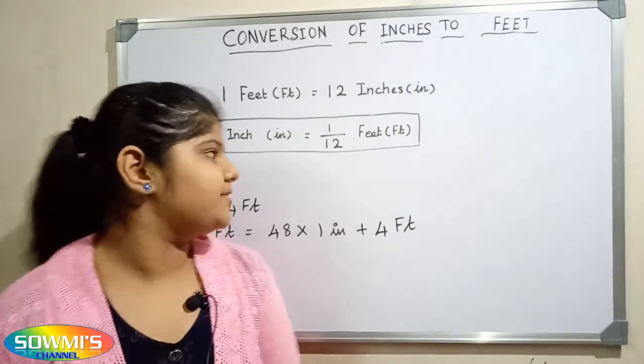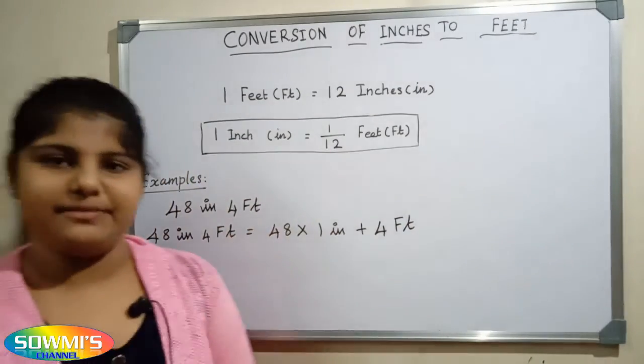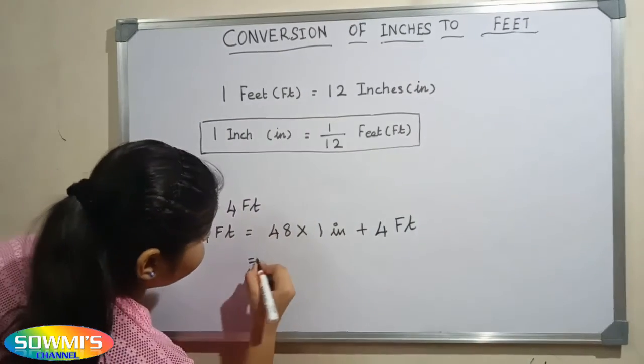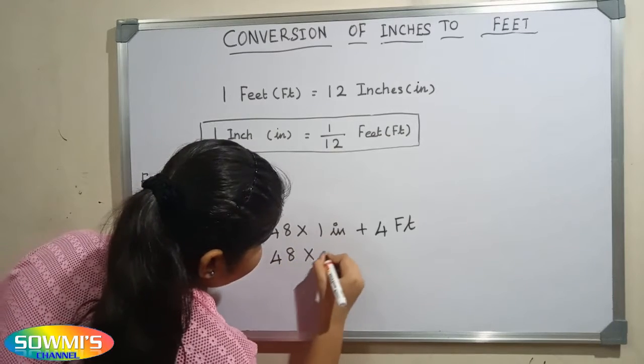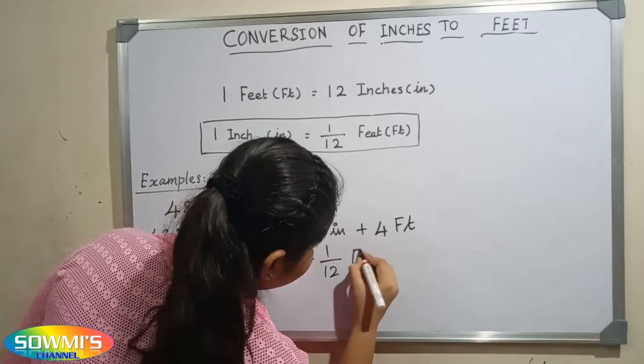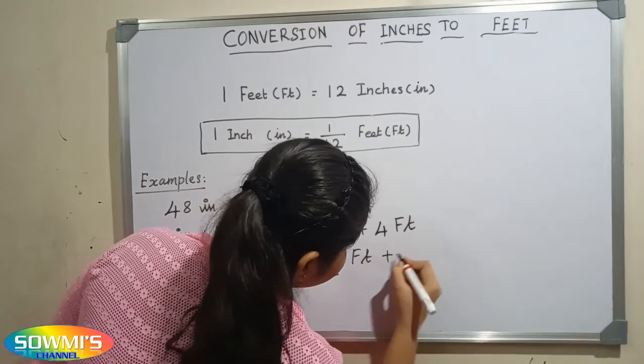Now we have to substitute 1 by 12 feet in place of 1 inch. So 48 multiply 1 by 12 feet plus 4 feet.